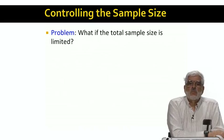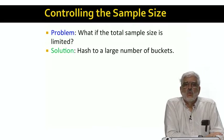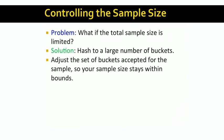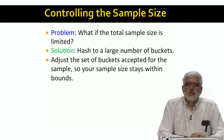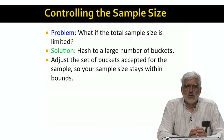Suppose now that we want our sample to be not a fixed fraction of the total stream, but a fixed number of samples from the stream. What we can do is hash to a large number of buckets and accept for the sample not just one bucket, but enough buckets that the resulting sample just stays within the size limit. If, as more stream elements come in, our sample gets too large, we pick one of the buckets that we had been including in the sample and delete from the sample just those elements that hash to that bucket. Organizing the sample itself by bucket can make this decision process efficient.